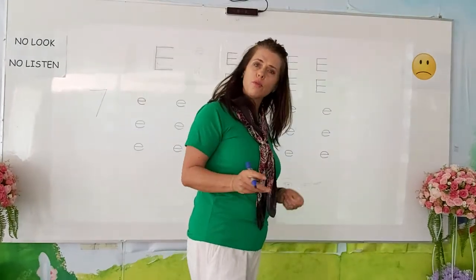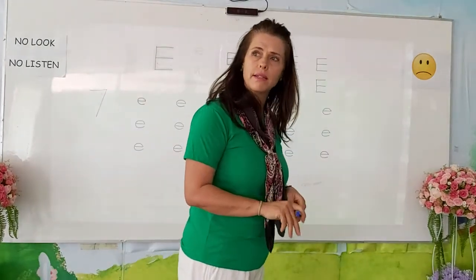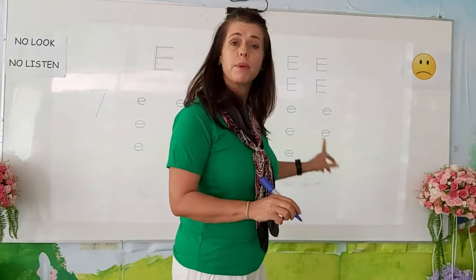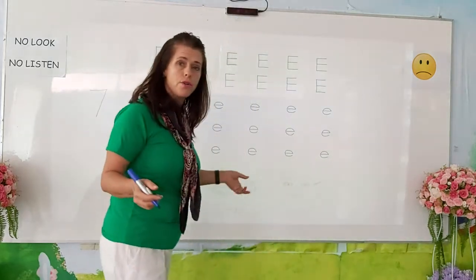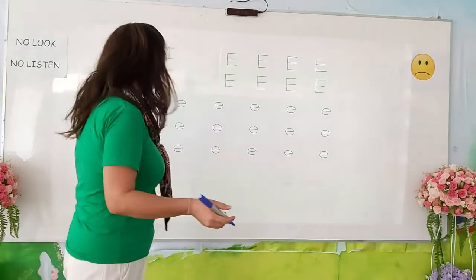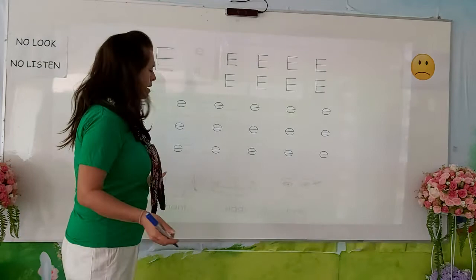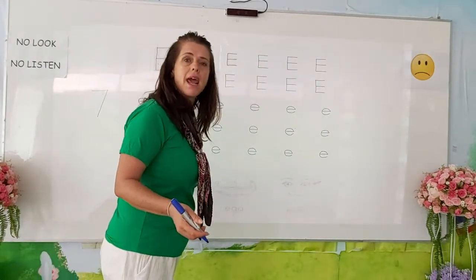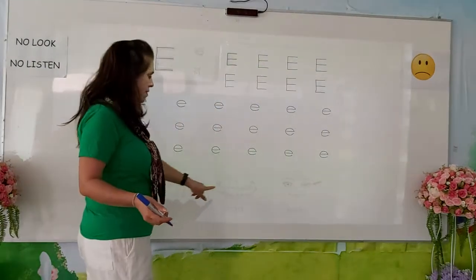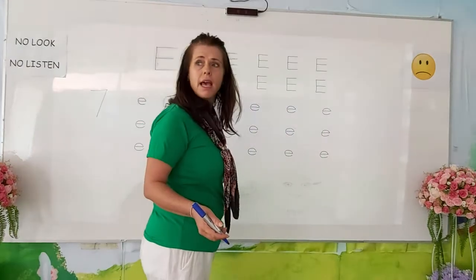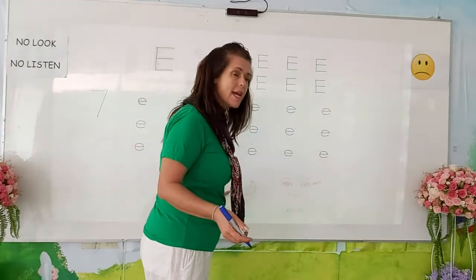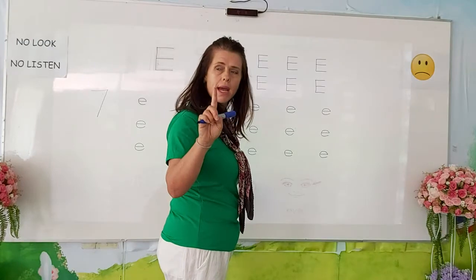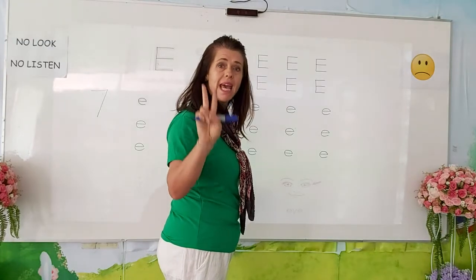Now if you are done with your e's, we are going to look at the words below and go through them. This is an elephant — it's an elephant. And these are eggs: one egg, many eggs.